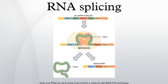Spliceosomal introns: The word intron is derived from the term intragenic region, that is, a region inside a gene. The term intron refers to both the DNA sequence within a gene and the corresponding sequence in the unprocessed RNA transcript. As part of the RNA processing pathway, introns are removed by RNA splicing either shortly after or concurrent with transcription. Introns are found in the genes of most organisms and many viruses.